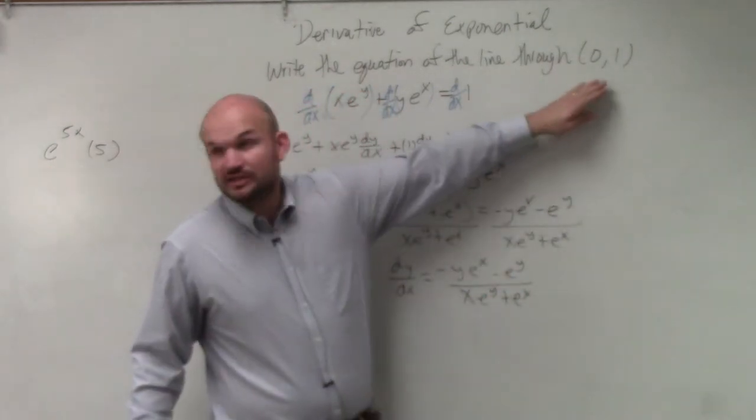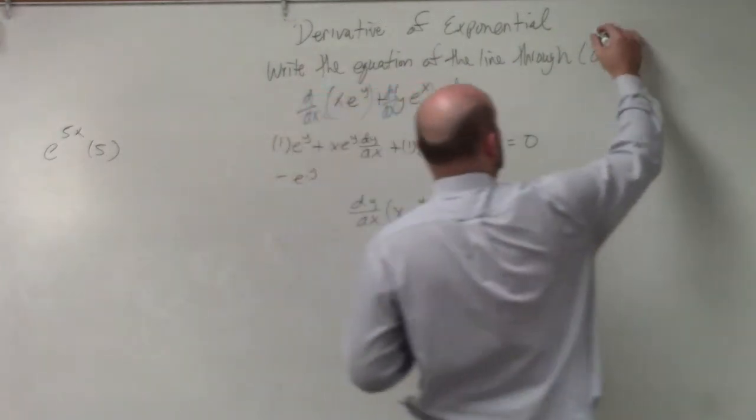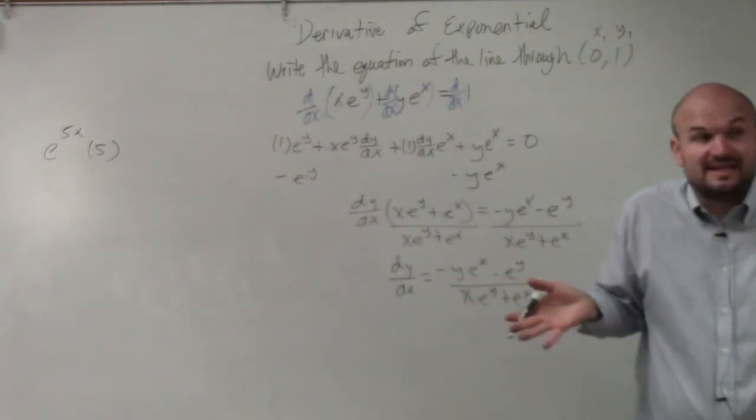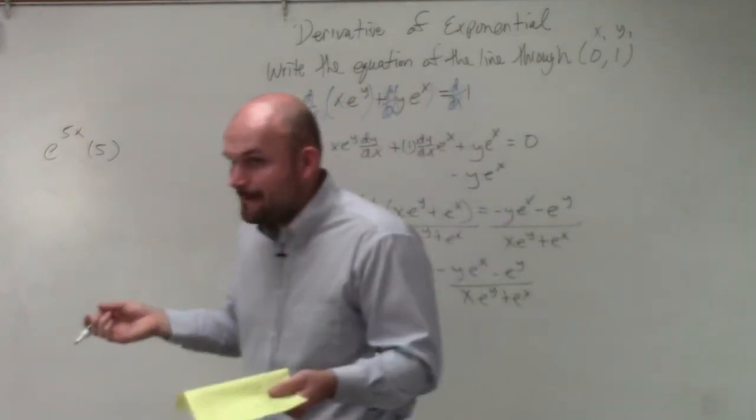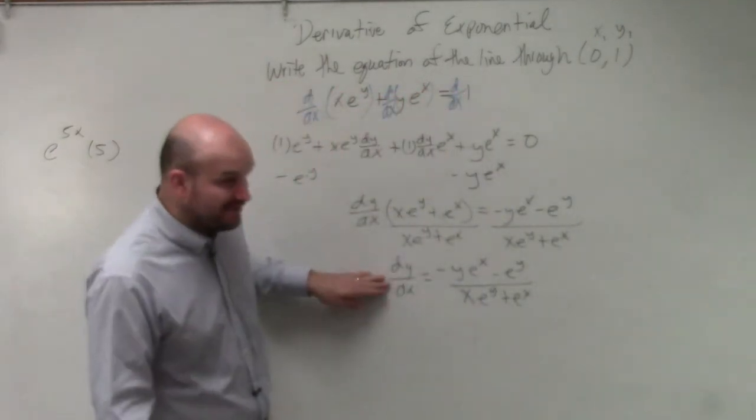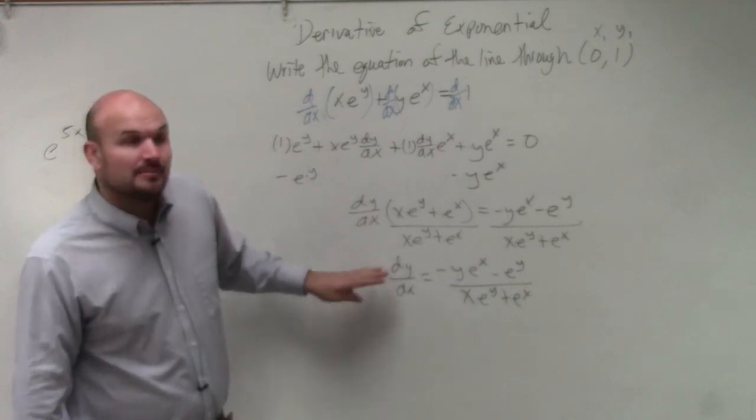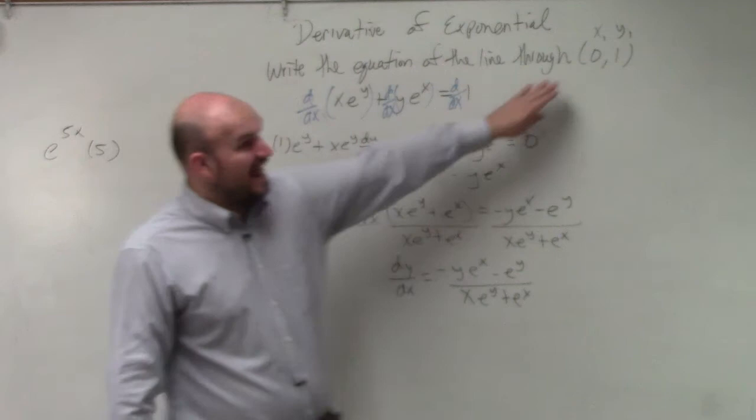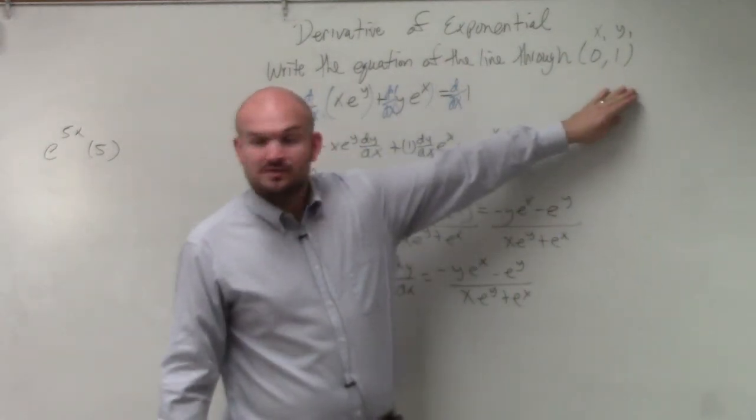remember, guys, we're writing the equation through a point, 0, 1. So we could say this is our x1, this is our y1, right? But what we need is our m. So here's our derivative, which looks really crazy. But again, we want to find the derivative. We want to find this derivative at this given point, 0, 1. So therefore,